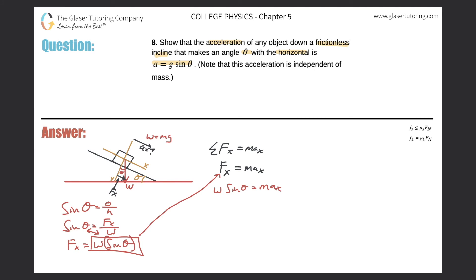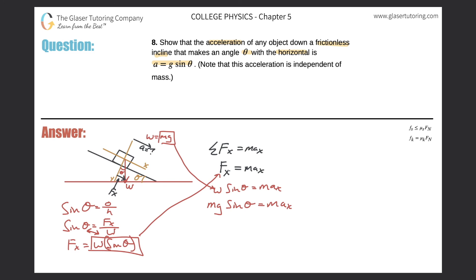We still need to expand W. Weight is simply W = mg, so substituting mg in for W gives: mg·sine(theta) = m·a_x. Now we can cancel the masses on both sides — they cancel out completely — and we're left with a_x = g·sine(theta). There it is — we found what we were looking for!